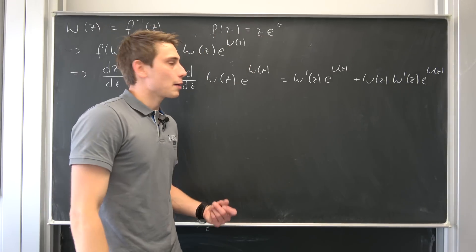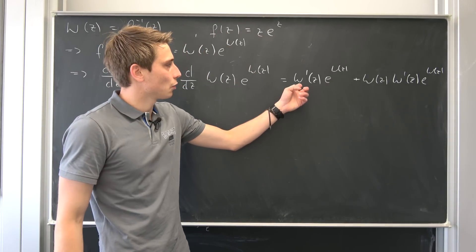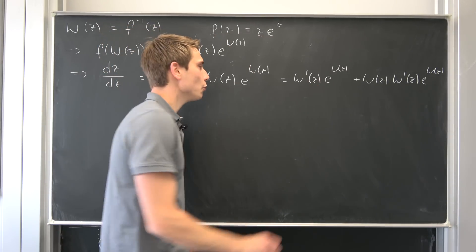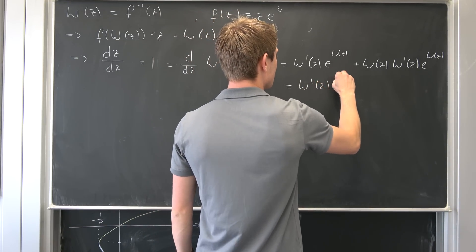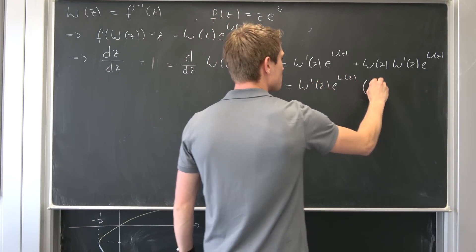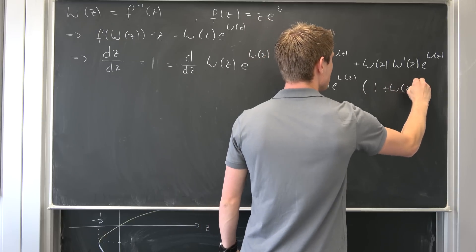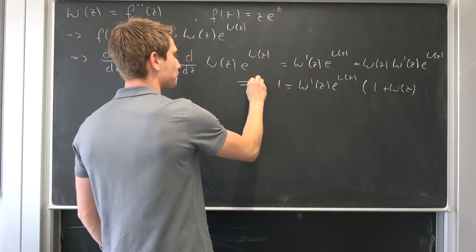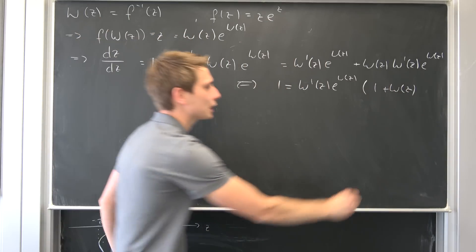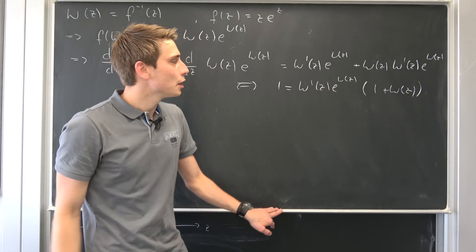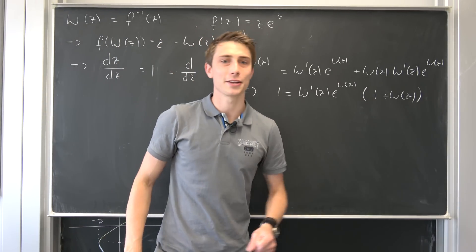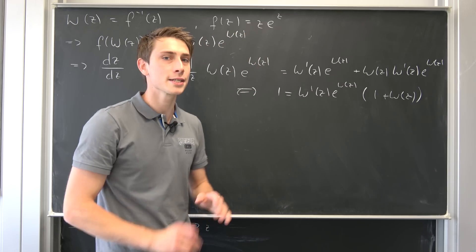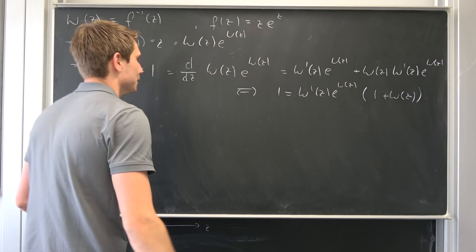And we already came pretty far. We can just factor out this term on both sides. So we end up with Lambert prime of z, e to the Lambert of z, times 1 plus Lambert of z being equal to 1. And now we can divide both sides by this whole term. We don't want it to be equal to 0. Those are the conditions for this derivative to even exist. We're going to talk about them in a minute.